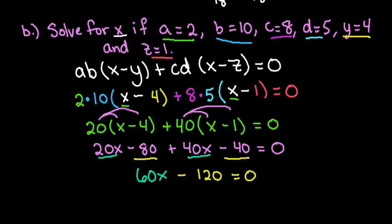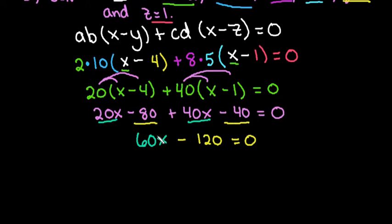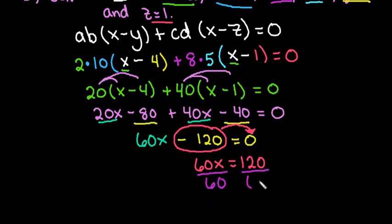And now at this point you have the choice of bringing the 60x to the right side or bringing the negative 120. I would take this because it's negative. So I would take the negative 120 and move it to the other side by adding it. So the opposite of subtracting is adding. So I can say that 60x equals positive 120. And then we would divide. So if I divide both sides by 60 we end up with x equals 2.